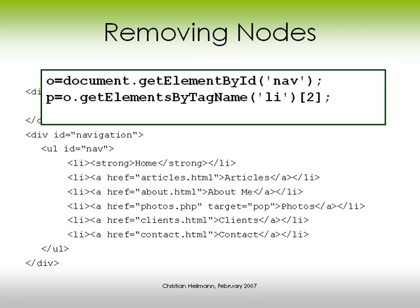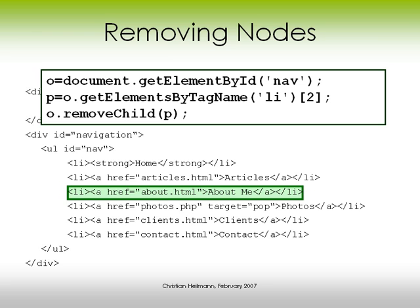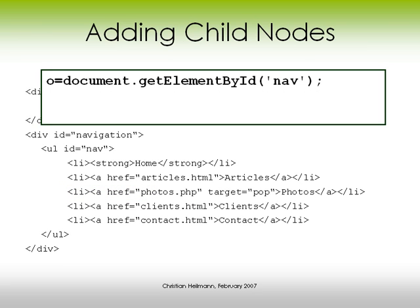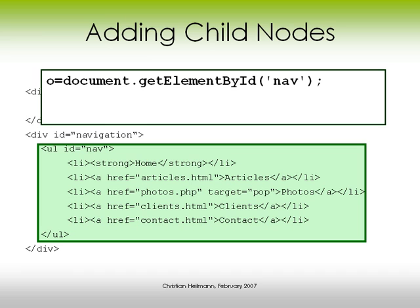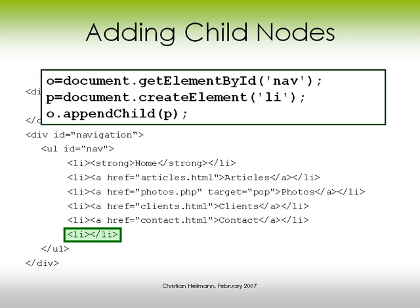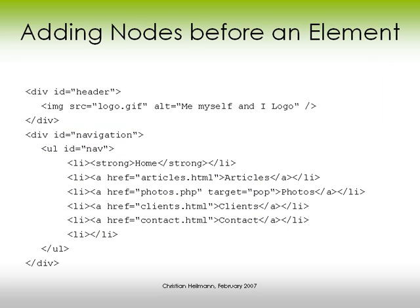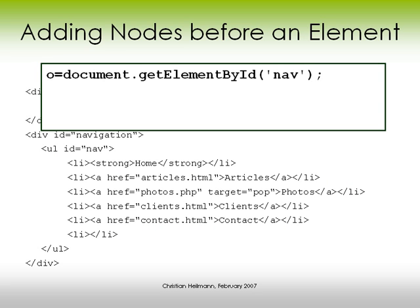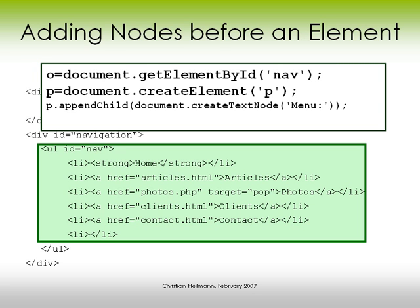Let's start with removing nodes. We go to our nav element, get the third item which is 'about me', and call removeChild — that removes it. We can also add new child nodes: go back to nav, create a new li element, and use appendChild to add it to the end. We can also add nodes before another element — get the nav element, create a new p element, and append a new text node called 'menu' to it. You can actually nest these calls to make it shorter.